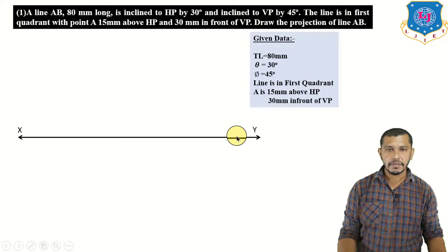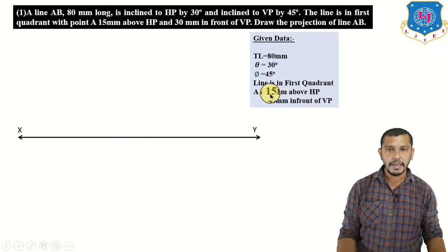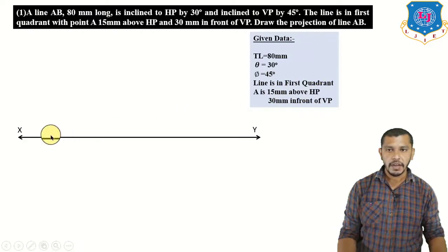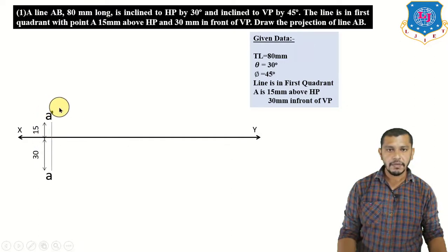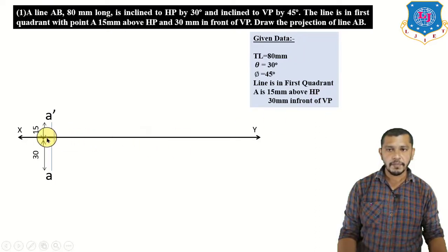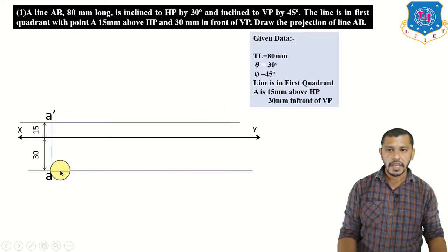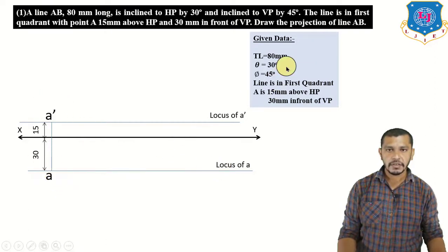First of all, draw the XY reference line and mark point A with reference to it. Point A is 15 mm above HP — so 15 mm above XY we get the elevation of point A — and 30 mm in front of VP — so 30 mm below XY we get the plan of point A. This gives us the locus of a-dash and the locus of a.